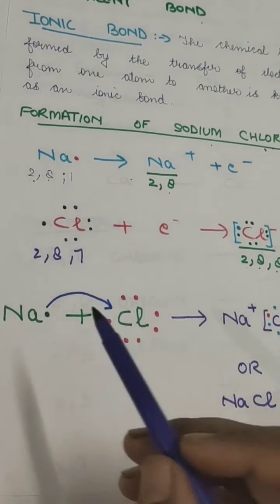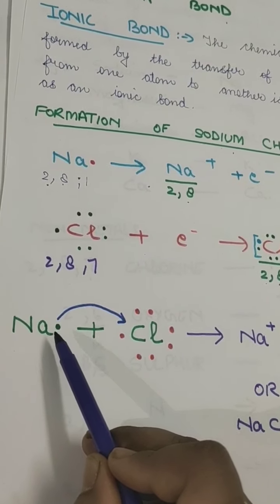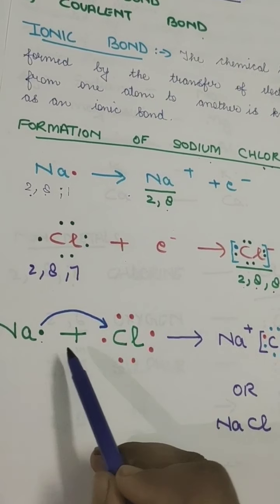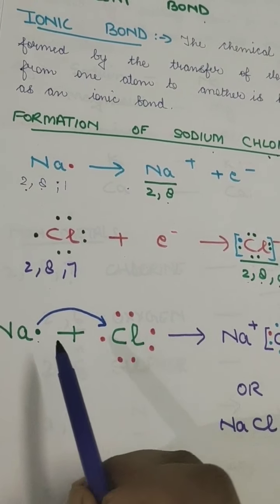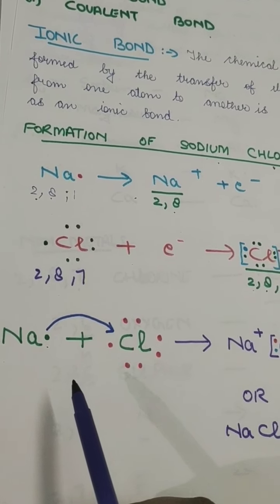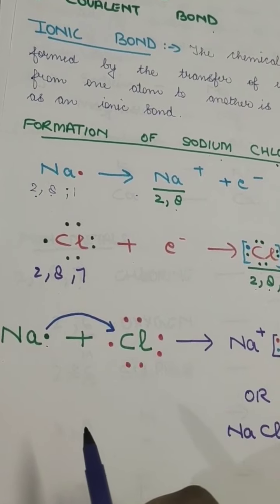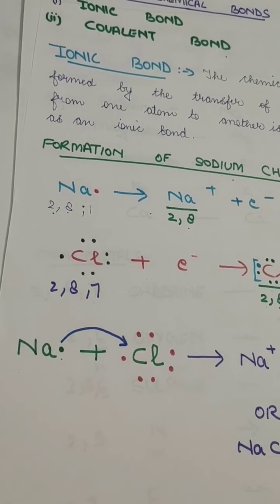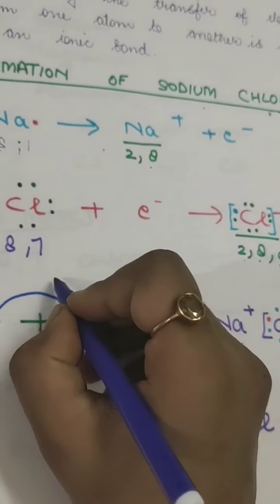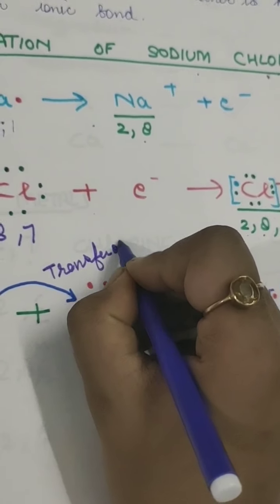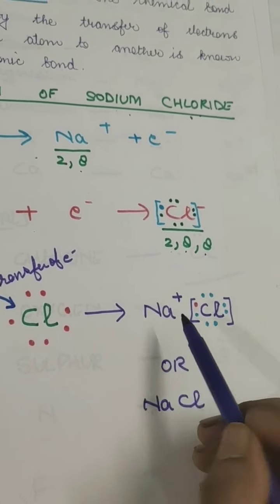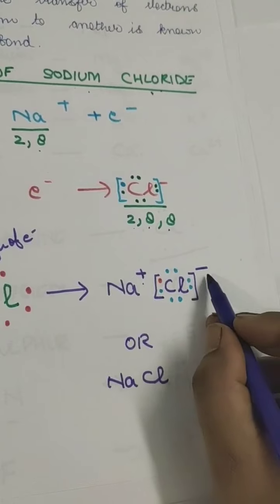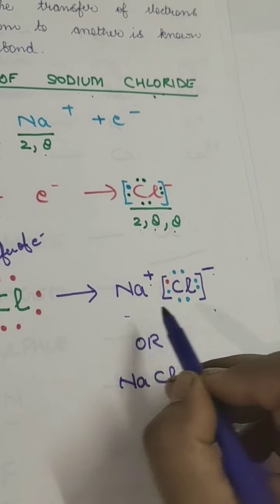So they will transfer the electron to each other. Sodium will give its 1 electron from its outermost shell to chlorine. Because of this transfer, they will become close and form a bond between each other which we call as an ionic bond. After the transfer of electrons, sodium becomes a positive ion (sodium ion Na⁺) and chlorine becomes a negative ion (chloride ion Cl⁻), forming an ionic compound.